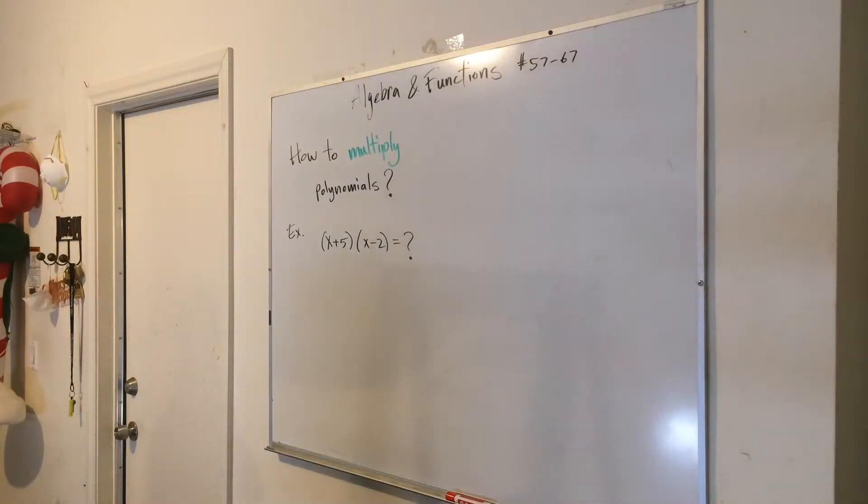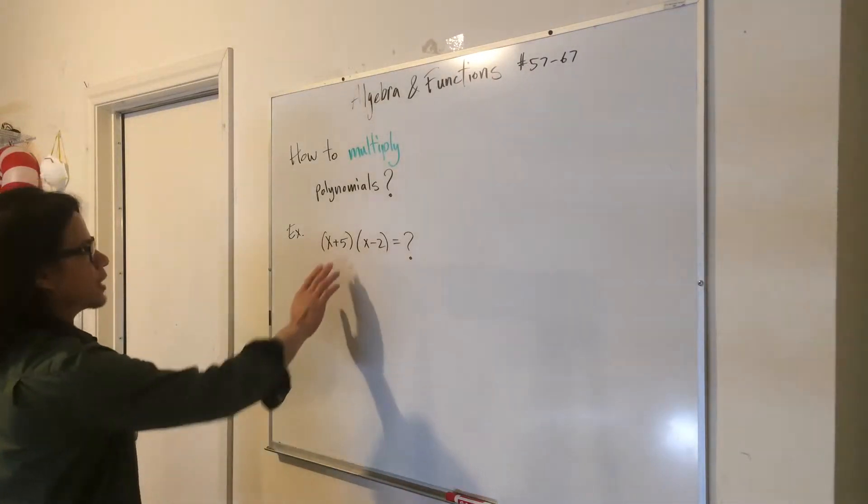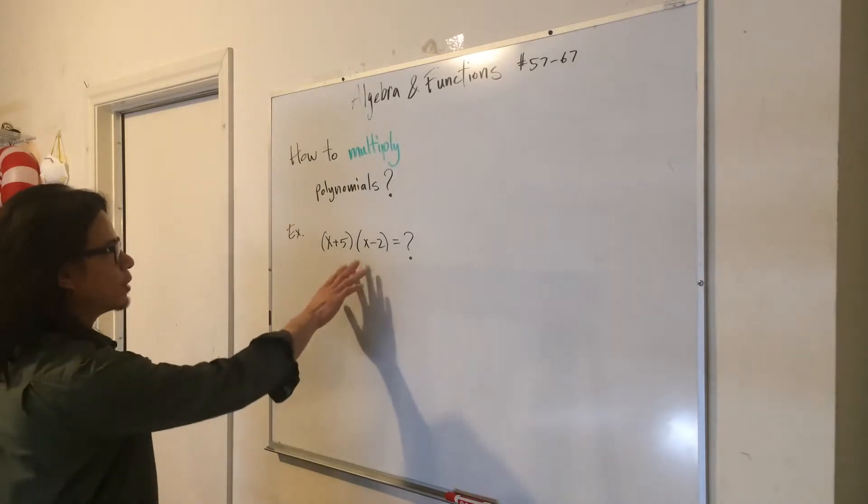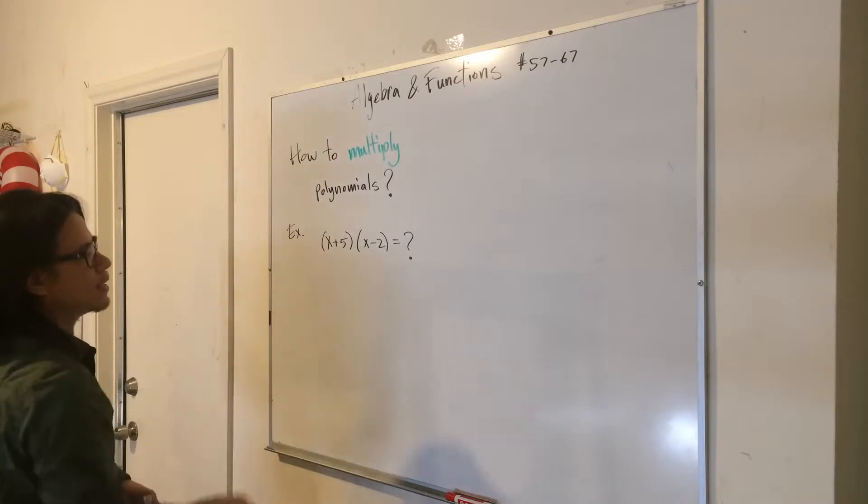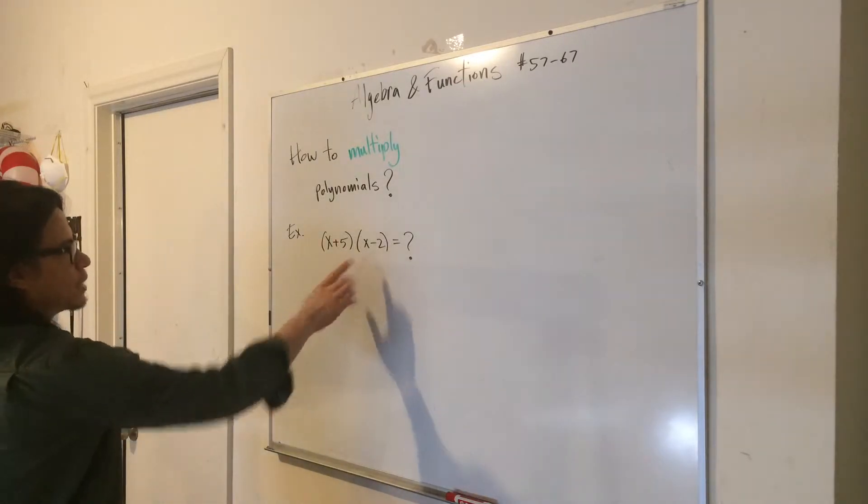So the funnest part about working with polynomials, I think, is getting a chance to FOIL them. So here's an example where we're asked to multiply x plus 5 times x minus 2.